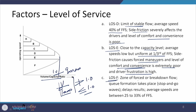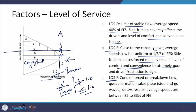LOS F is the zone of forced or breakdown flow — the most congested condition. Operating in LOS C or D range is still acceptable in the sense that the system will keep working, but below that it is not acceptable at all. Forced or breakdown flow causes formation of queues, delays, stop-and-go movements, with average speeds in the range of 25 to 33 percent of the free flow speed.